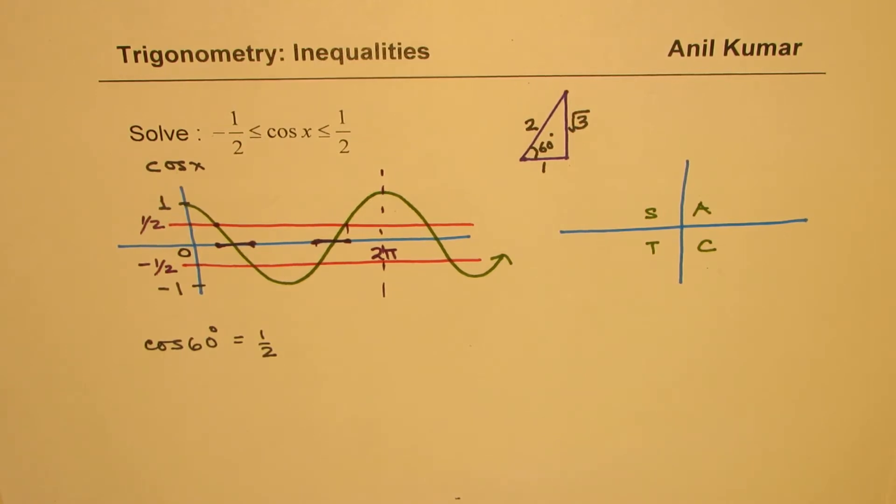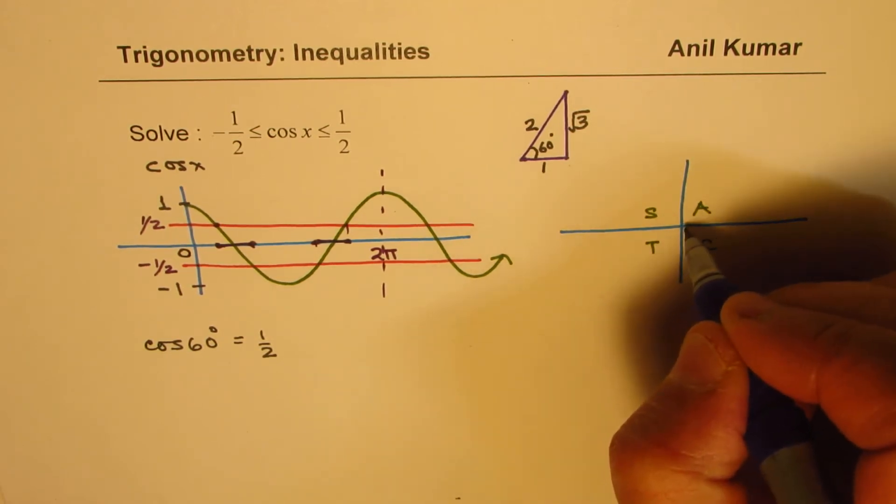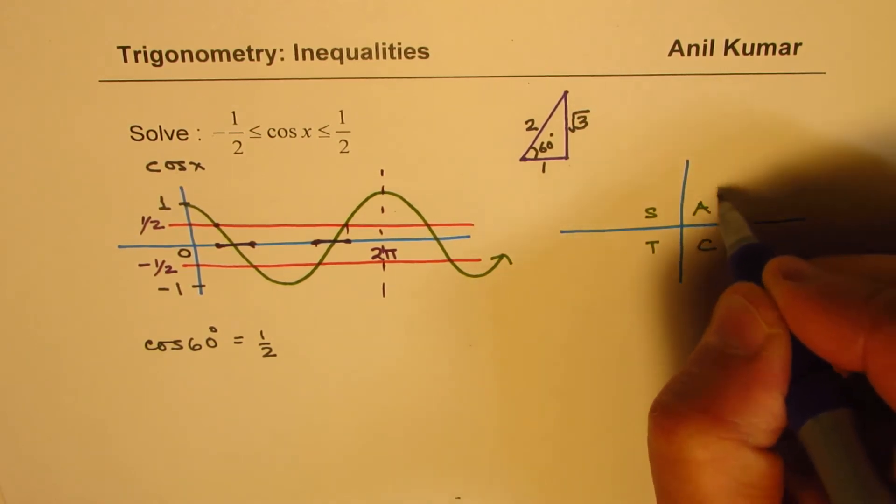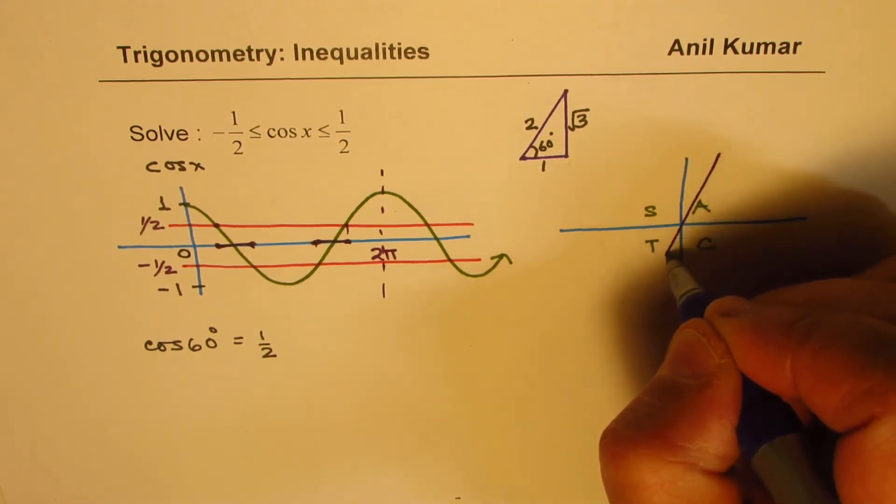So we can get the other angles also where it is negative half. So that gives you, let me draw a line at 60 degrees. So 60 will be kind of like this. So let me draw this line and extend.